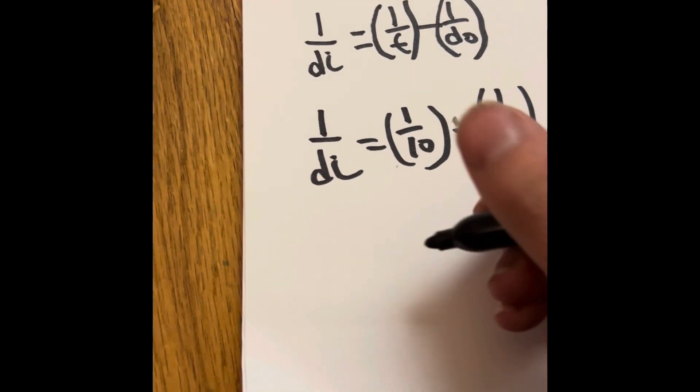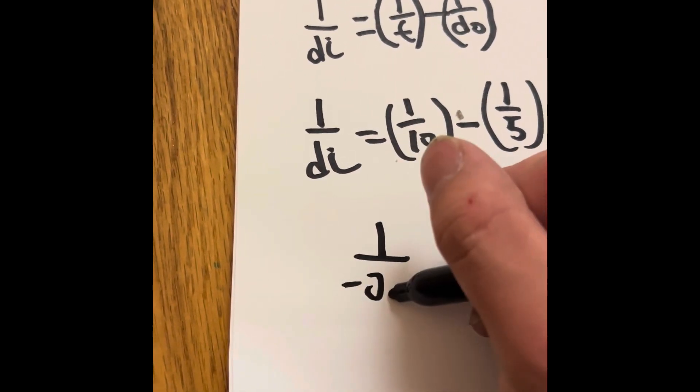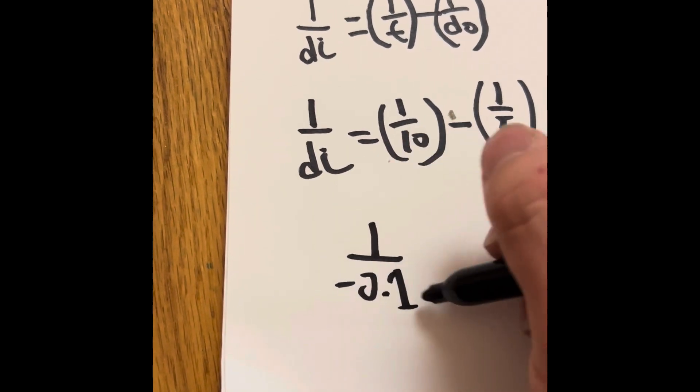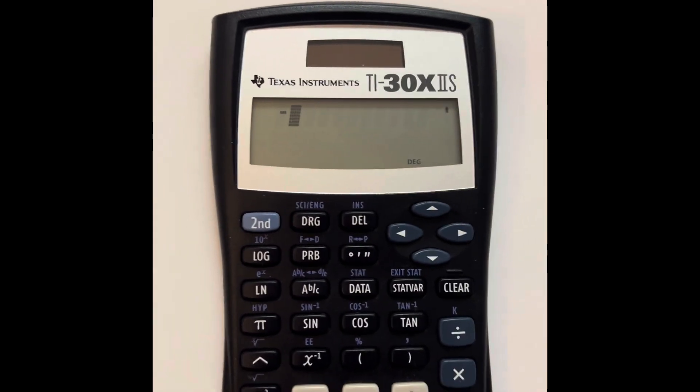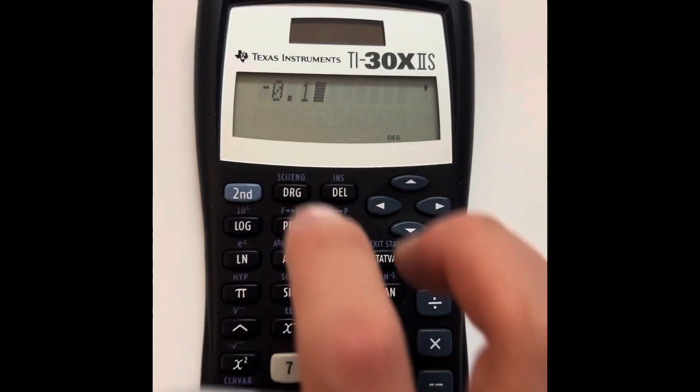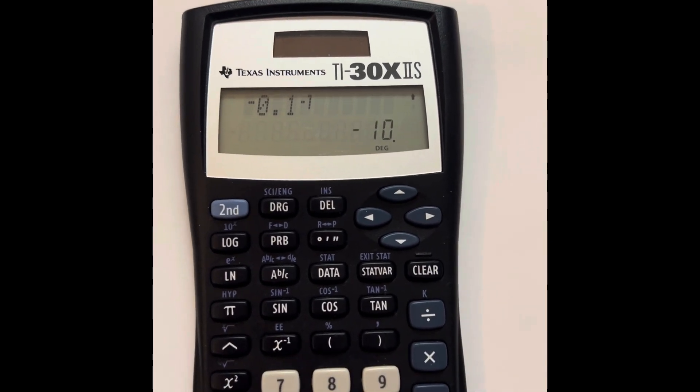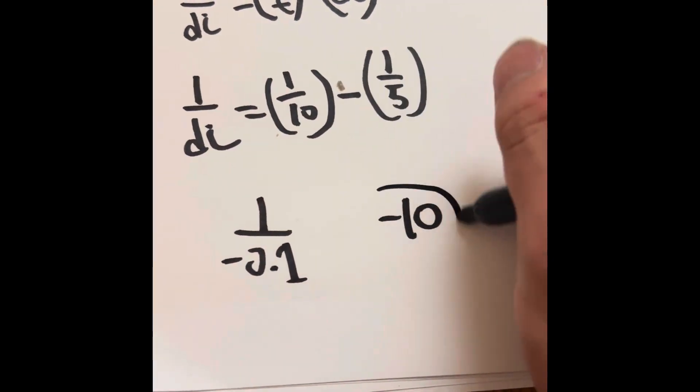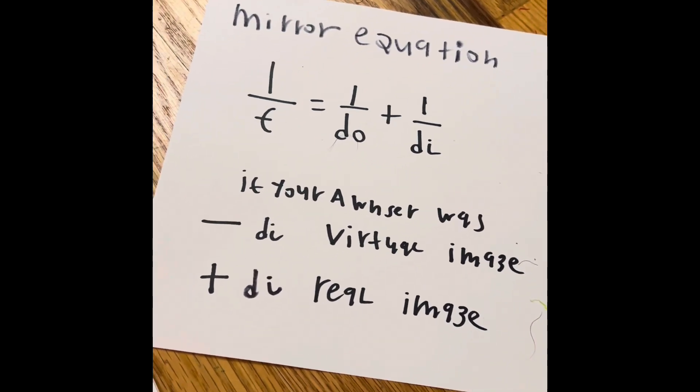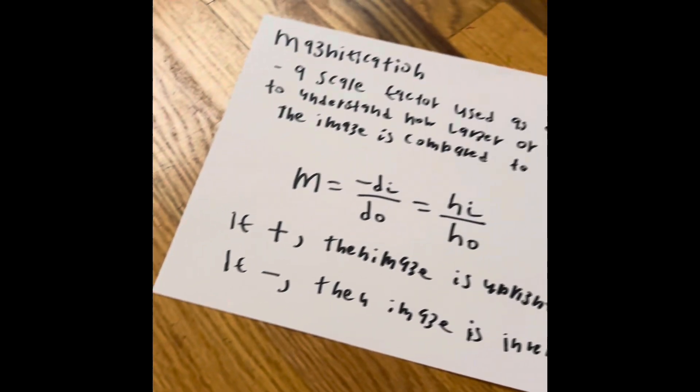But hang on, we're not done yet. That's because that so-called 1 divided by di is a fraction. What we have to do after getting negative 0.1 is we have to use this negative reciprocal, and that is going to be our di. So it's going to be negative 10. Now we can assume that that's going to be our answer and say that it's a virtual image because it's a negative number.